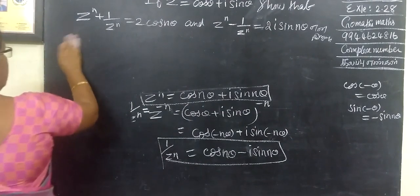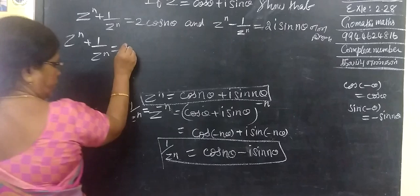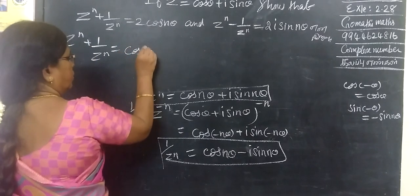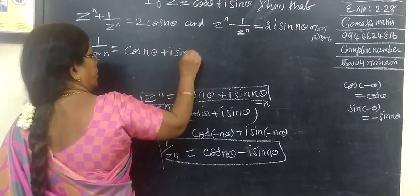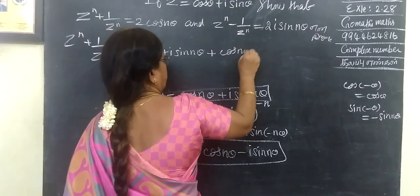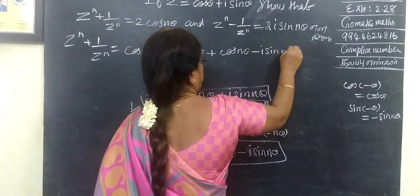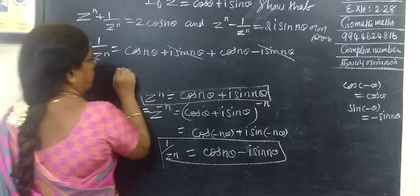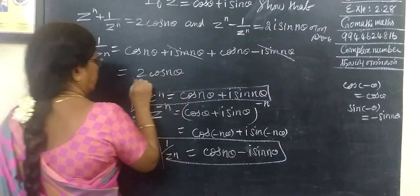So z power n plus 1 by z power n equals cos n theta plus i sin n theta plus cos n theta minus i sin n theta, which equals 2 cos n theta.